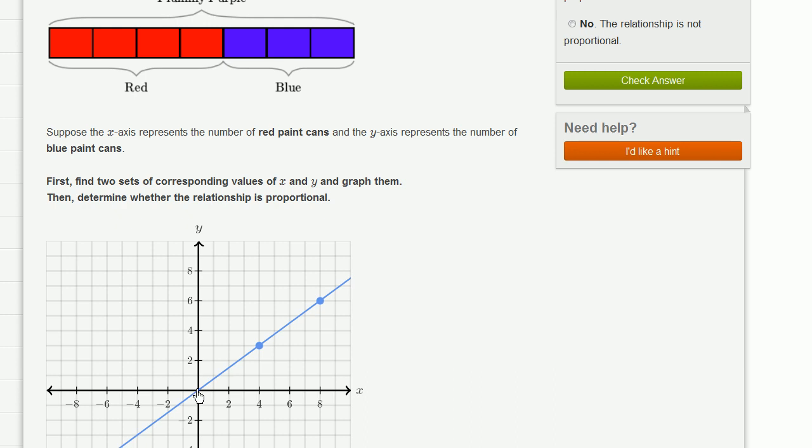if I'm going to have 3 fourths of that blue, 3 fourths times zero is still going to be zero. So this is a proportional relationship. And we could check our answer. Yes, it is.